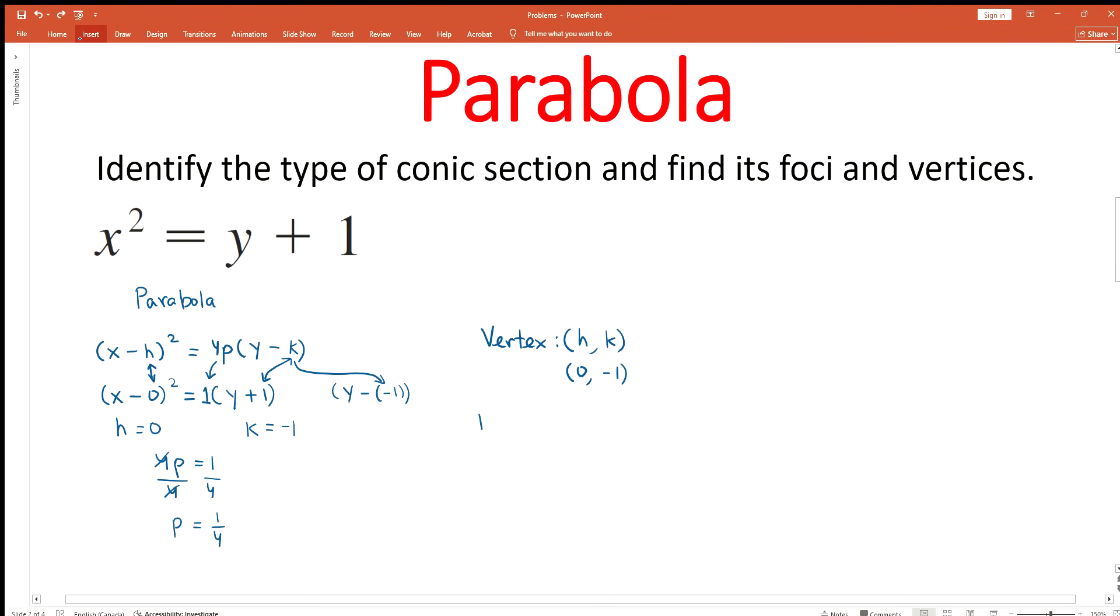Now we can find its focus. The formula for focus of a parabola that opens in the upward direction is (h, k+p). h = 0, k = -1, and p = 1/4. We can combine -1 and 1/4 by finding a common denominator.